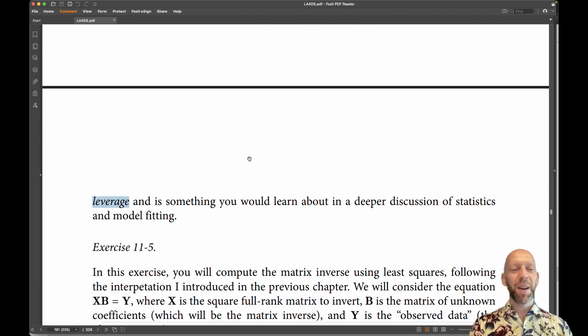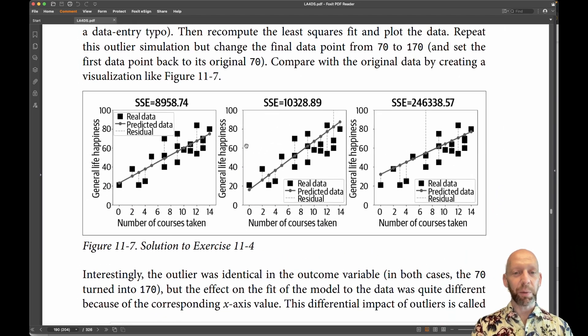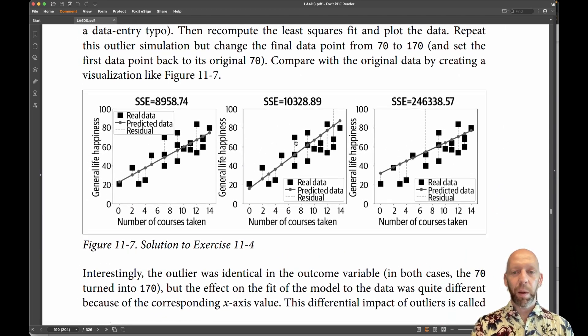So if you've learned about regression in a statistics course, you're probably familiar with this term. If you've never heard this term before in the context of statistics, don't worry about it. The concept is really simple. And it's basically what you see here, that the impact of an outlier on a regression model, a general linear model, is dependent on where that outlier is located in the data, and what the other data values are.